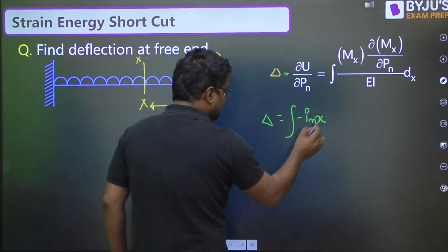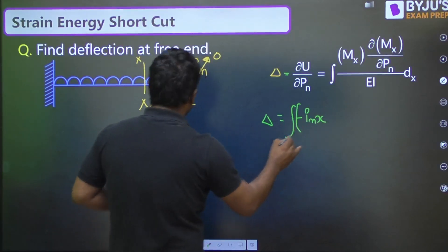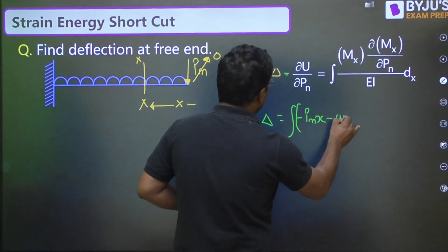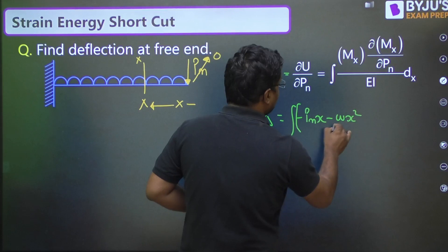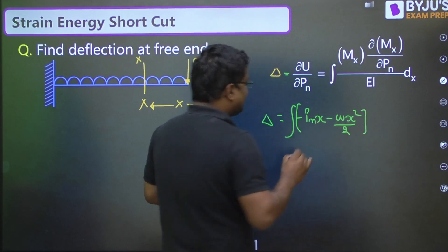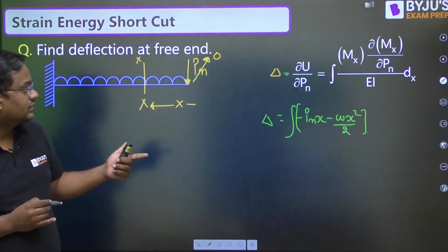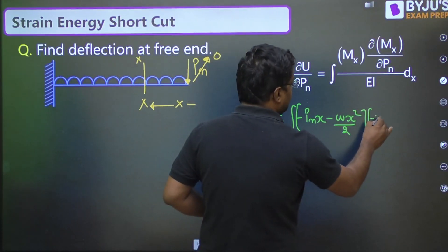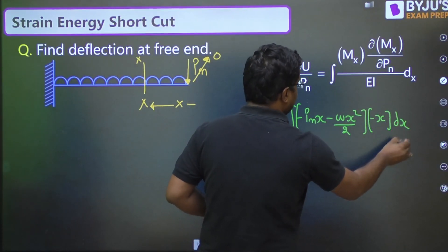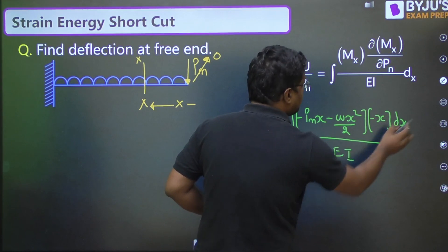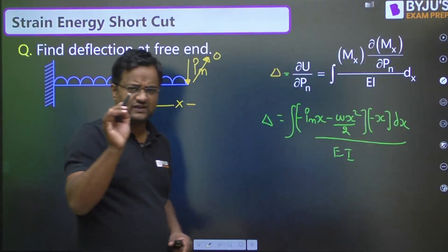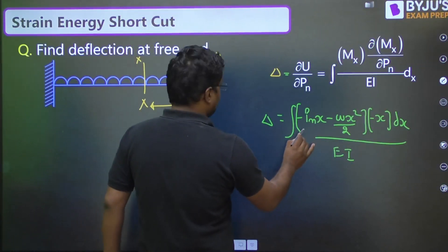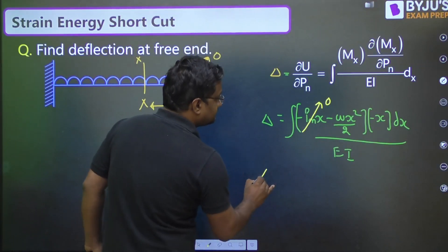So, delta is equal to MX is minus PNX. MX is minus PNX at X distance into minus W. W is the UDL intensity. X squared by 2. Whatever written here, differentiate with respect to PN. So, differentiate with respect to PN. It is minus X DX upon EI. Just after the first step, come to original avatar. That is actually, the PN value is 0.